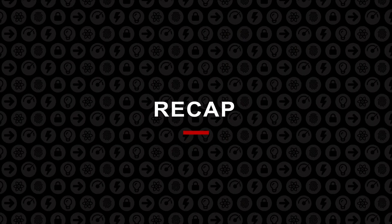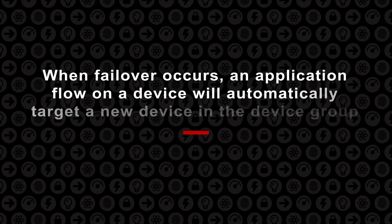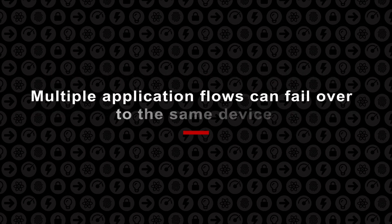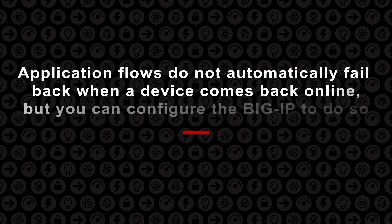To recap, there are a few basic points to remember about failover. When failover occurs, an application flow will automatically target a new device in the device group. Multiple application flows can failover to the same device. By default, application flows do not automatically fail back when a device comes back online, but you can configure the BIG-IP system to do so.